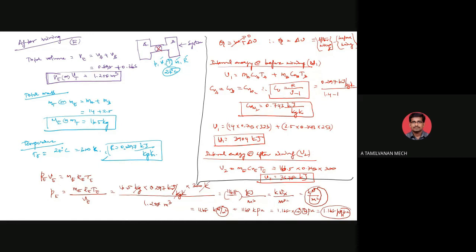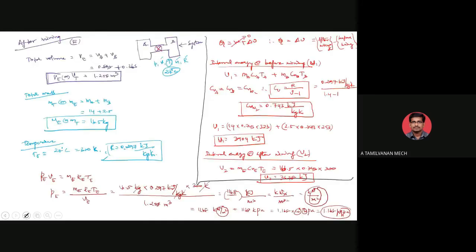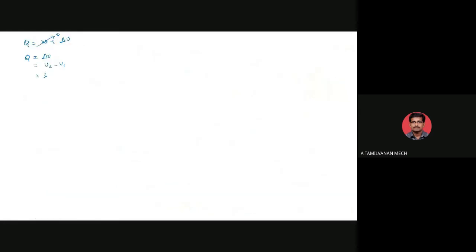Now we find the heat transfer. Q equals W plus delta U equals U2 minus U1. U2 is 3678 kilojoule, U1 is 3904 kilojoule. So Q equals approximately minus 226.2 kilojoule.